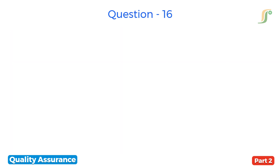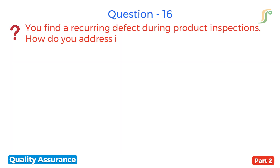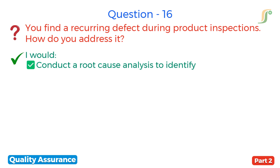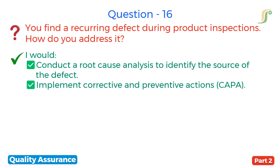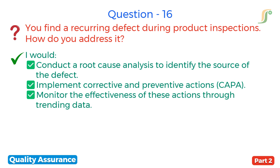The sixteenth question is: you find a recurring defect during product inspections — how do you address it? I would conduct a root cause analysis to identify the source of the defect, implement corrective and preventive actions, and monitor the effectiveness of these actions through trending data.